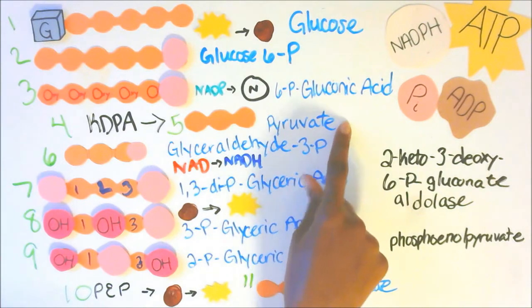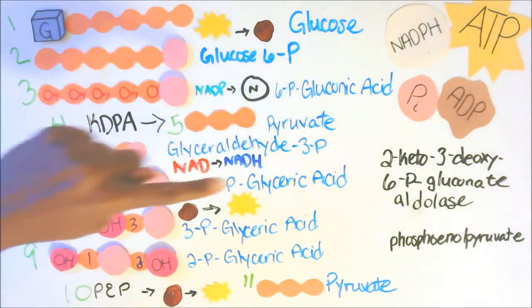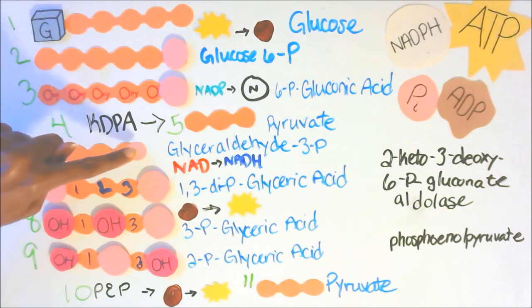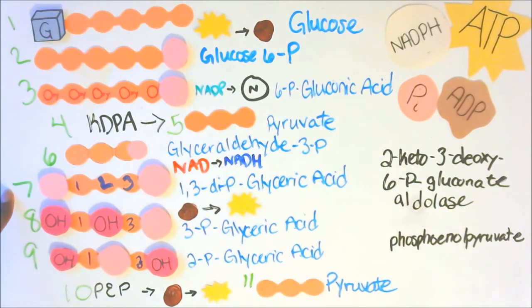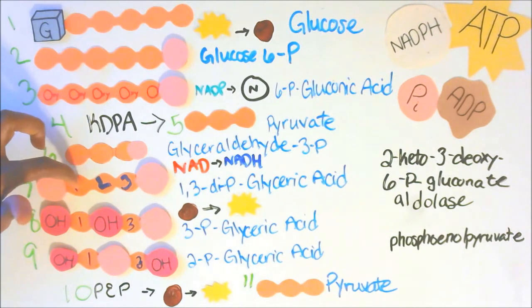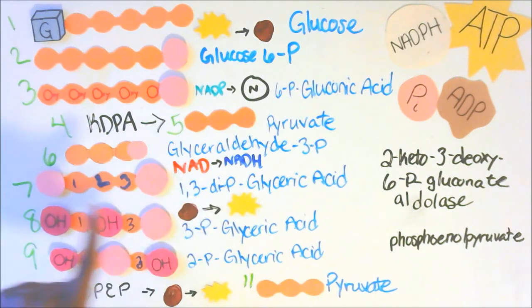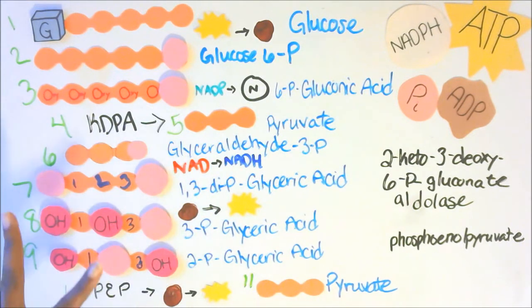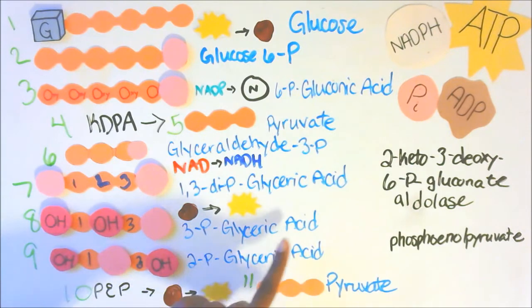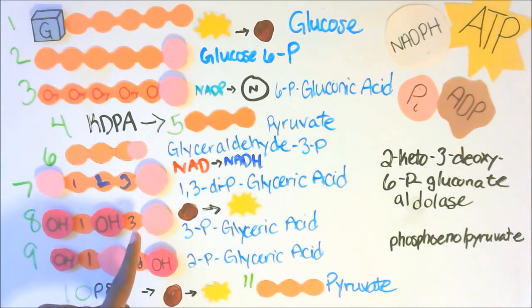Our fifth molecule is pyruvate. Our sixth molecule is glyceraldehyde 3-phosphate — on the third carbon, positions 1, 2, 3, we have a phosphate group. Our seventh molecule is 1,3-di-P glyceric acid, which has three carbons. On the first carbon there is a phosphate group, and on the third carbon there is another phosphate group — hence 1,3-di meaning two phosphates — glyceric acid.